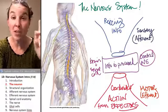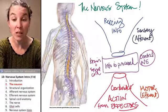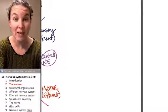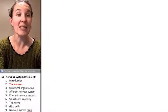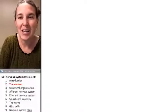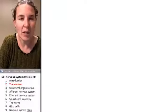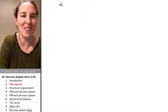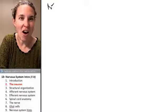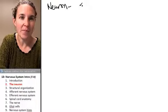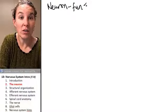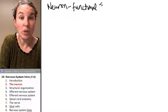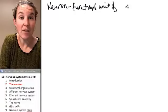And the primary structure that is responsible for transmitting information like this is the neuron. So the neuron is a cell that is basically the functional unit of the nervous system.